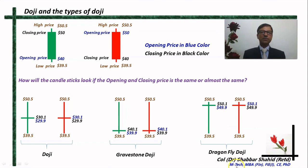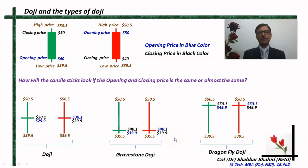So we have now seen what is a doji, what is a gravestone doji, and what is a dragonfly doji. These types of candles, where the opening price and the closing price are the same or almost the same, convey a strong meaning — they send a strong signal. What those signals are and the significance of these doji patterns we will see in the next lesson.